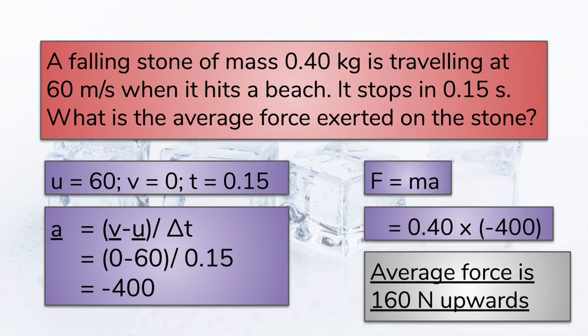When we substitute this number and the mass of the stone in the formula F equals MA, the result is minus 160 Newtons. The meaning of the negative number is that the force opposes the falling motion, and therefore the force vector acts upwards. In our answer, we should make the direction clear.